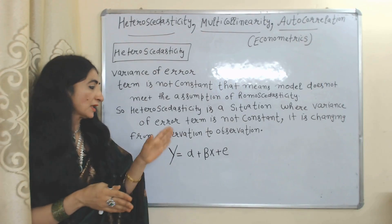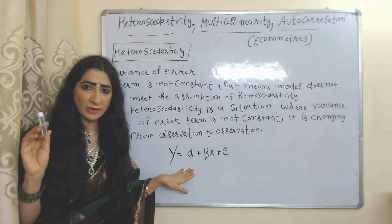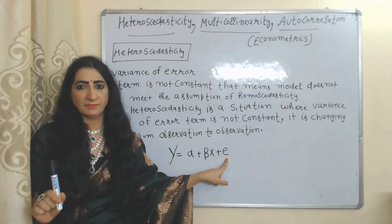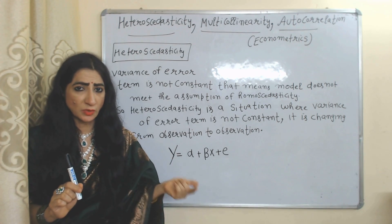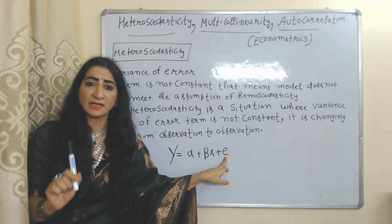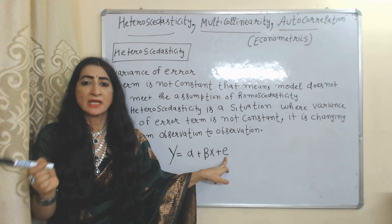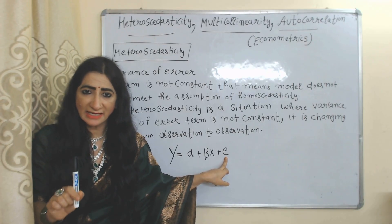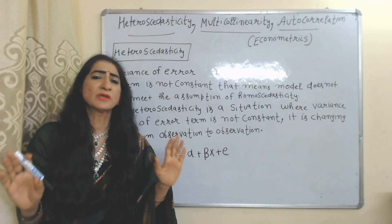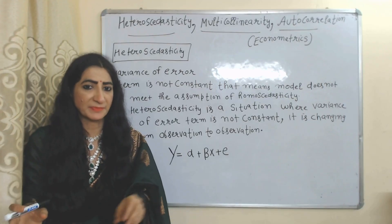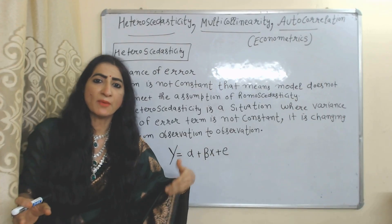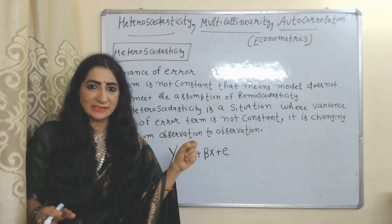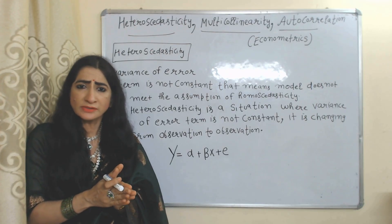First, we will talk about heteroskedasticity. This equation we have already studied in the simple linear regression model — this is called the error term. In simple linear regression, we assume the variance of this error term will remain constant, which is called homoskedasticity. Heteroskedasticity is the opposite: the variance of error terms is not constant.